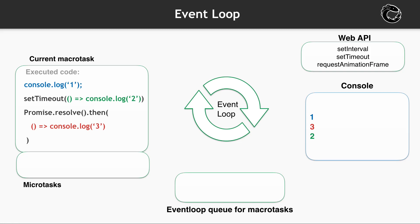It is simple. The first console.log is executed in the current active MacroTask. The console.log from setTimeout will be run in a next MacroTask, so the browser puts it in a queue. But the promise callback is scheduled to run in a MicroTask just after the current active MacroTask. So that console.log runs before the setTimeout one. That's why the output order is 1, 3, and then 2.